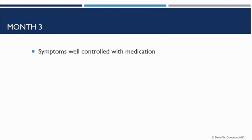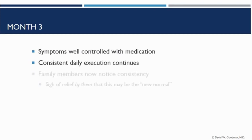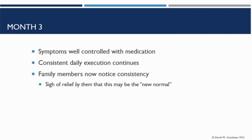In month three, symptoms are pretty well controlled with medication. Hopefully the medicine dose has been optimized, lasting over the course of the whole day without causing problems with sleep or appetite. Execution is consistent and you can rely on yourself every single day. Family members now notice the consistency. In the beginning of treatment, family members may say, 'We support this, but...' and then they wait — 'We've seen this before. You were good for a week, for two weeks.' But now at three months people are saying, 'Wow, this really seems like it's going to be a consistent, stable new way.' As a result, you start thinking about how much more you can do in life in the future.